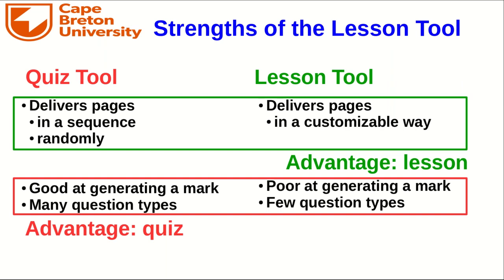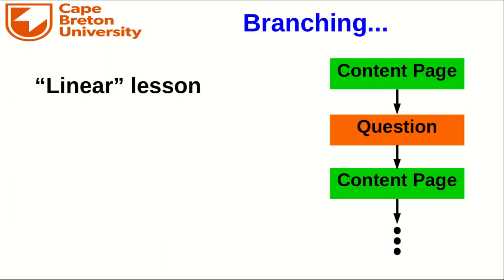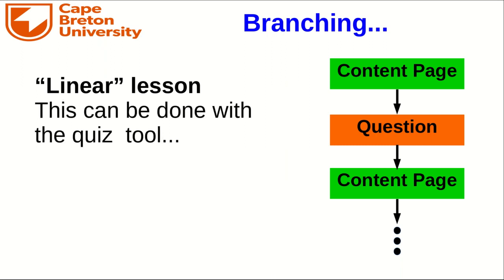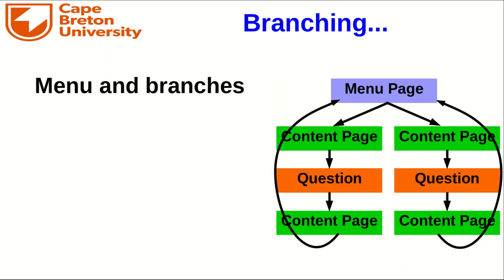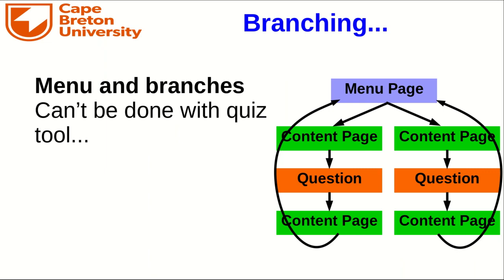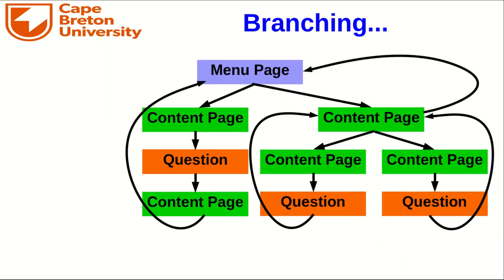The ability to deliver pages in a customizable way is actually a huge advantage, because it's what allows you to set up lessons to be reactive or interactive, so that they deliver pages to some students which those students might need, but don't bother delivering those pages to other students. The simplest structure would be a linear one, which can be done perfectly well in the quiz tool. But as soon as you have any branching, there's no way to do that with the quiz tool. You can make branching considerably more complicated, with additional levels and so on.